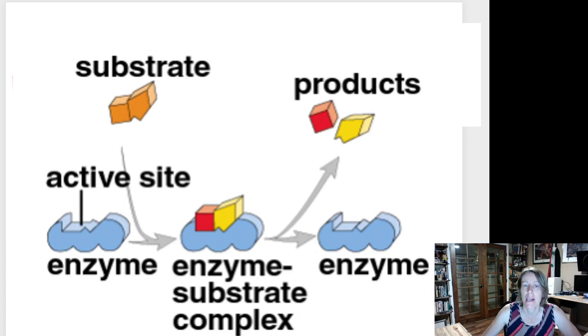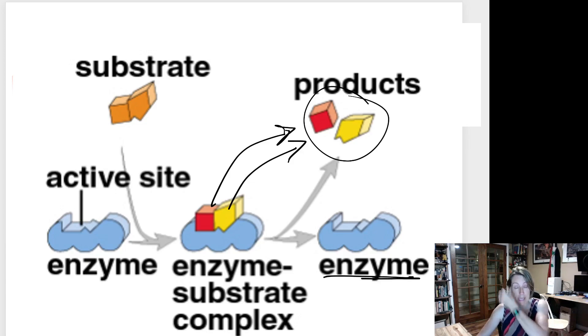Once the substrate has slotted itself into the active site, you have the enzyme-substrate complex. This is where the enzyme grabs hold of the substrate molecule and twists and tweaks and stretches and bends it to weaken those bonds and make them fall apart at lower activation energy. Once the bonds have been separated, the products are released.